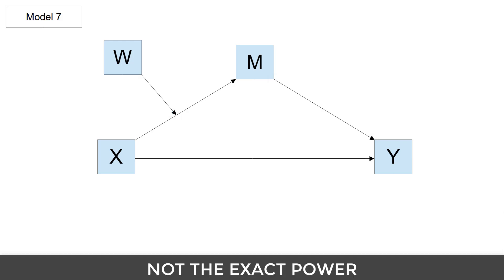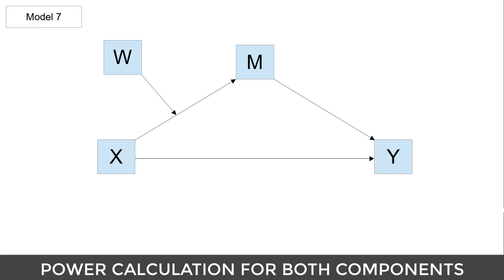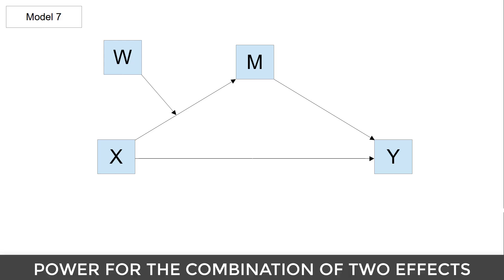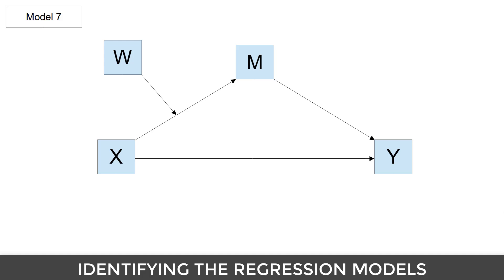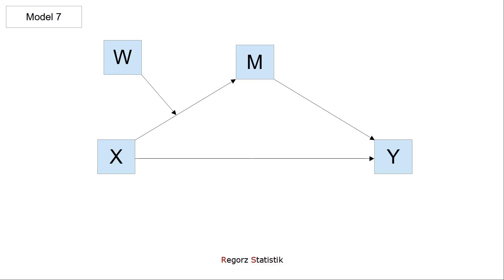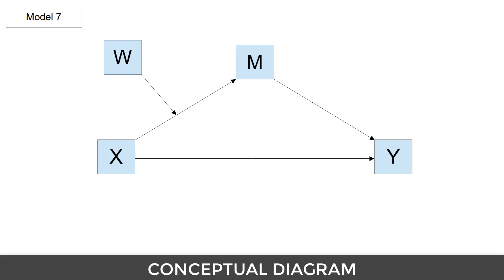With GPower you cannot calculate the exact power for the index of moderated mediation directly, but what you can do is perform a power calculation for both components of this index — the interaction for one path and the normal regression weight for the second path — and calculate how large a sample you need for the combination of both those effects to be significant. First, you have to identify the regression models that go into the process model you want to test. Let's assume you want to run process model 7.